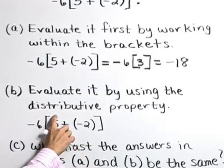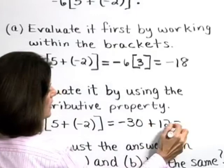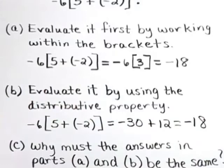Negative 6 times 5 is negative 30, and negative 6 times negative 2 gives positive 12. Now, adding these terms gives negative 18.